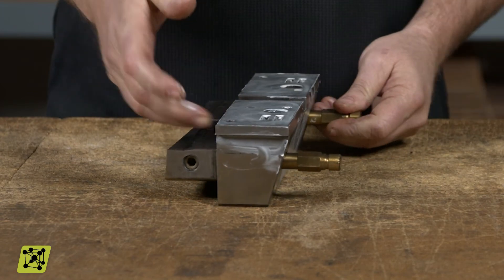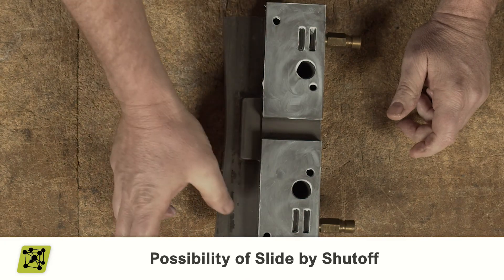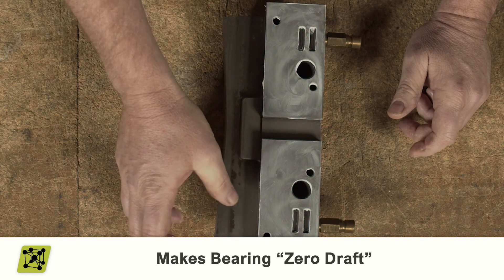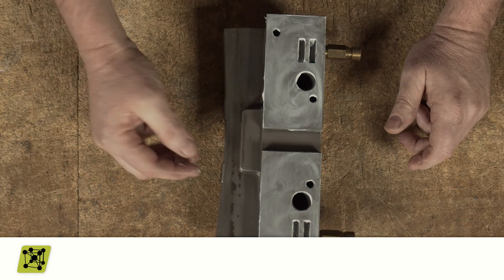There are some situations where you may have a slide by shutoff, which makes your bearing zero draft. When that's the case, the shutoff and cavity form the edge of the part near the bearing surface.